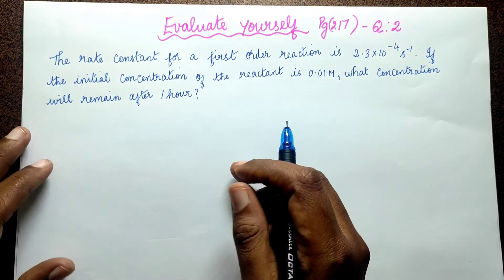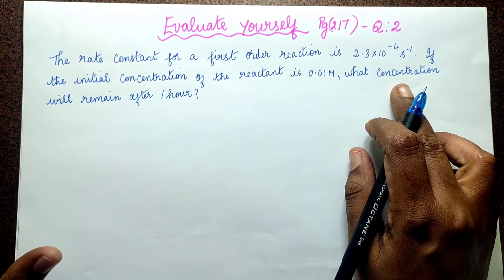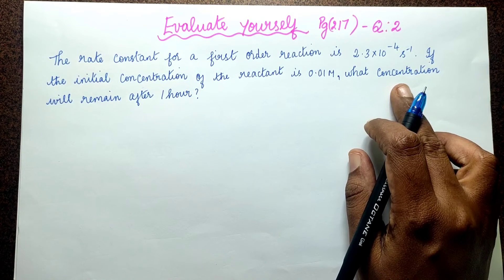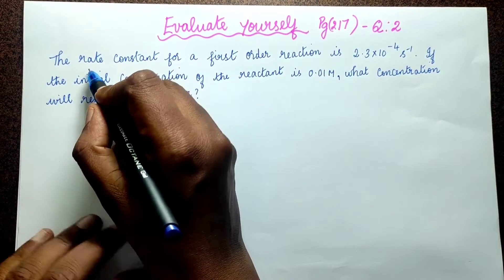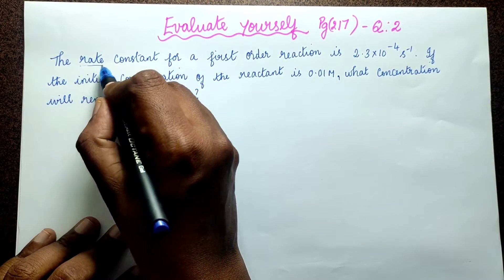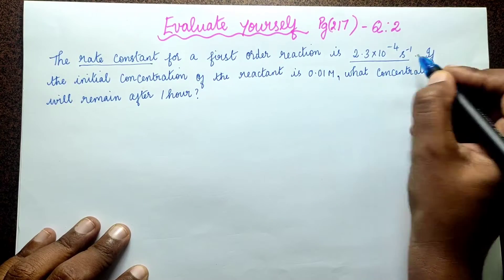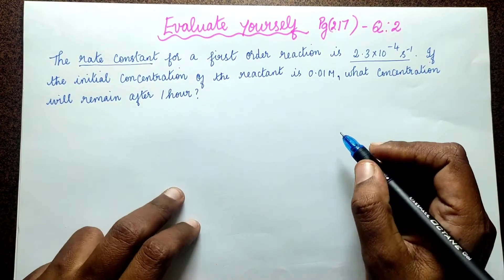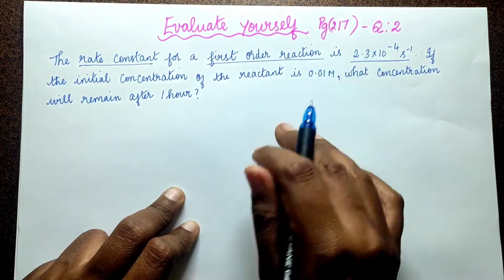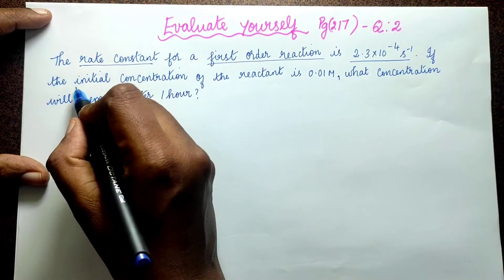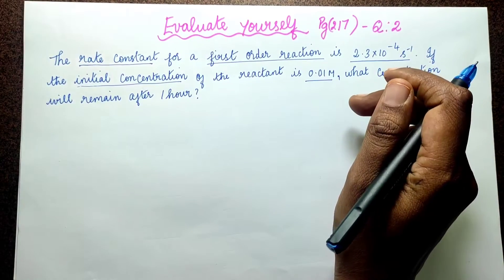So, what we need to find from this question is the final concentration. What has been provided in the question: the rate constant is given as 2.3 × 10⁻⁴ per second. This is a first order reaction, and the initial concentration is 0.01 M.